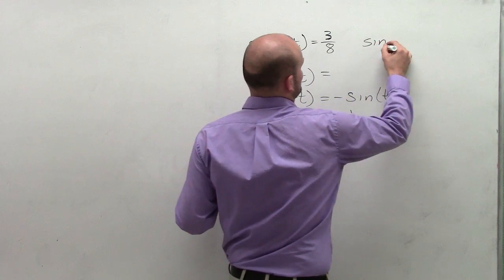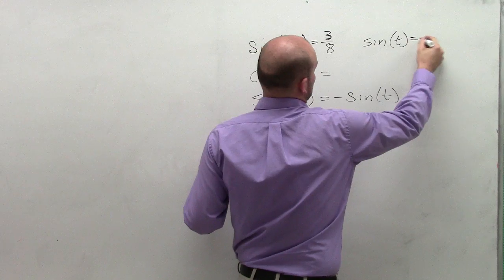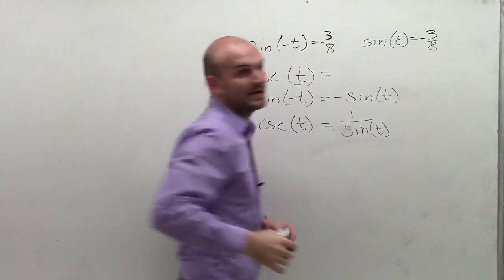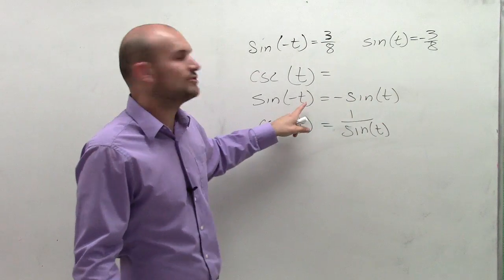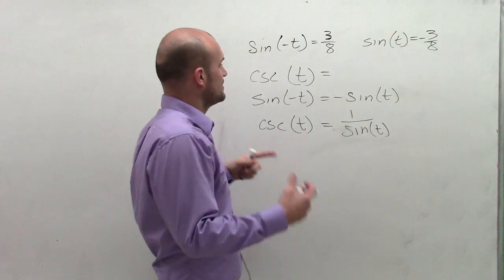Well, that means that sine of t has to equal negative 3/8, because negative 3/8 times a negative is going to become a positive, which equals my other positive 3/8.